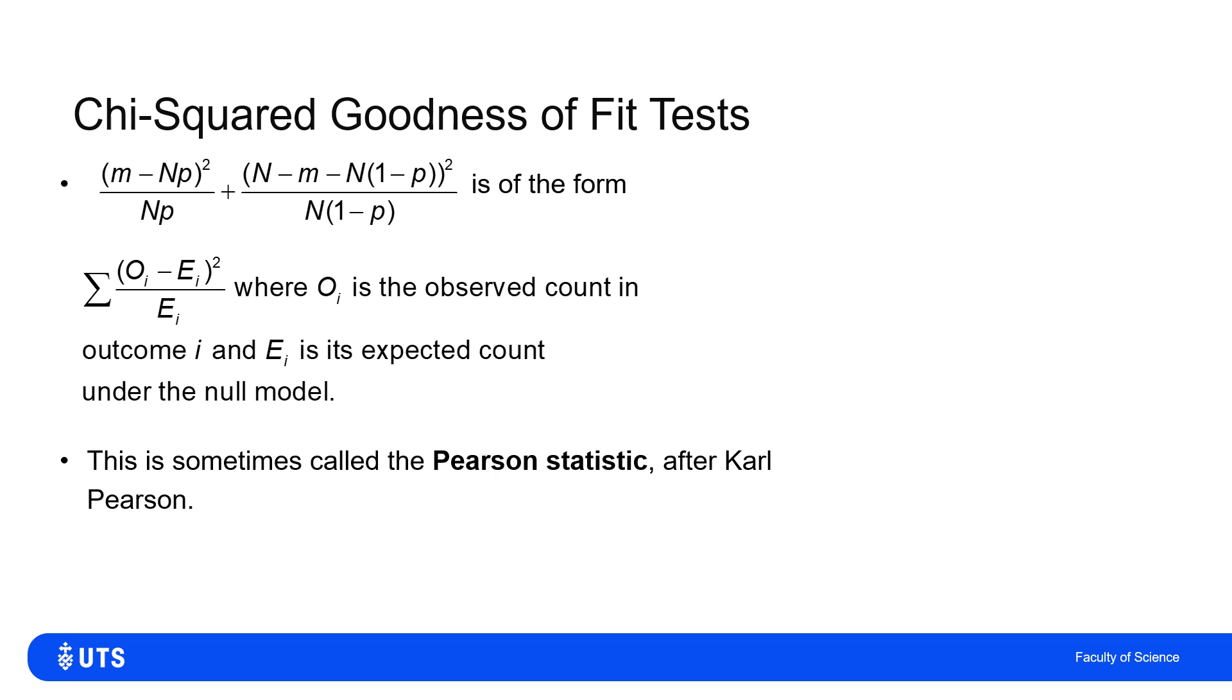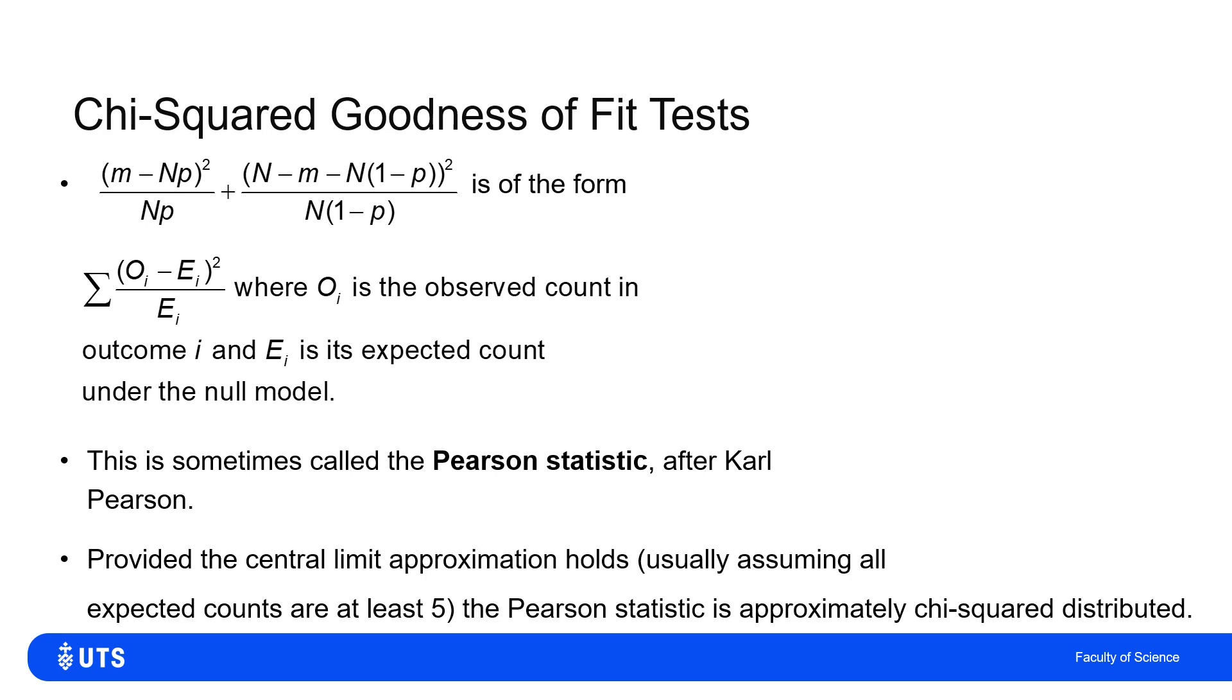That's sometimes called the Pearson statistic, named after Karl Pearson. When we can invoke the central limit theorem, so the central limit theorem is true for large samples. What's sufficiently large for all of these assumptions to hold? Well, different courses, different textbooks will give you different answers.